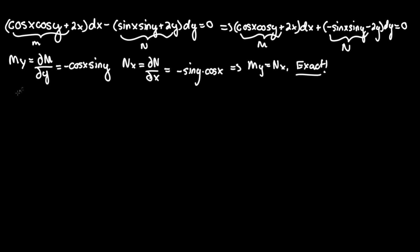Now let's find the parent function F of x comma y. This is equivalent to the integral of M dx or N dy. And this equals the integral of this entire M term that we've found here: cosine x cosine y plus 2x dx.